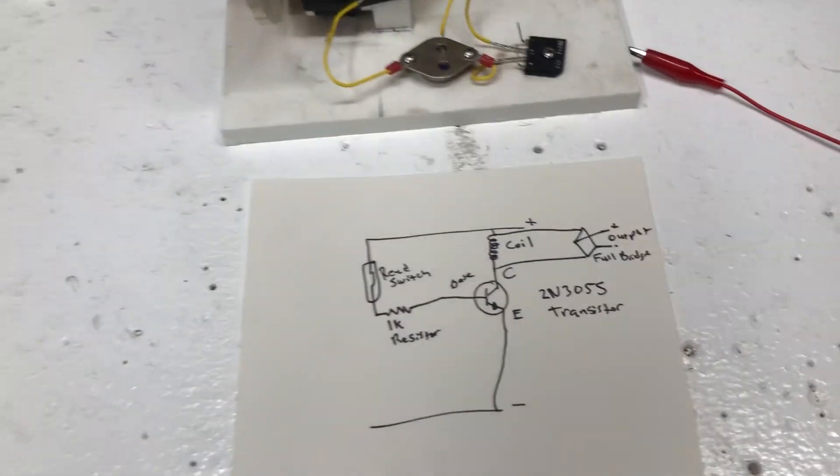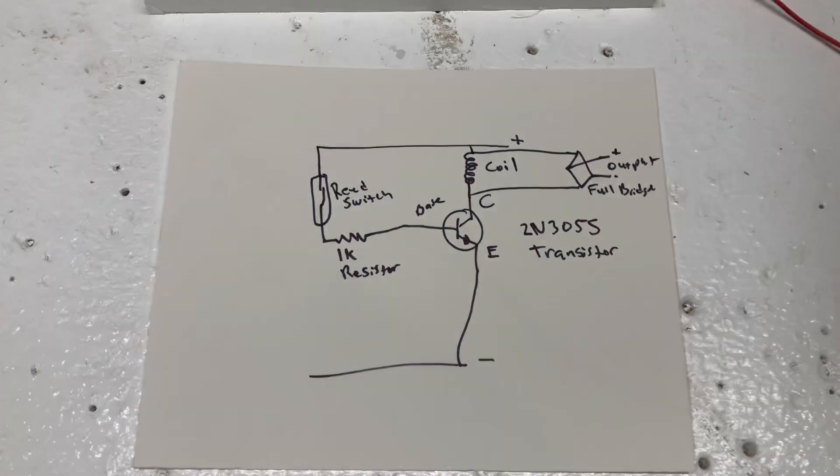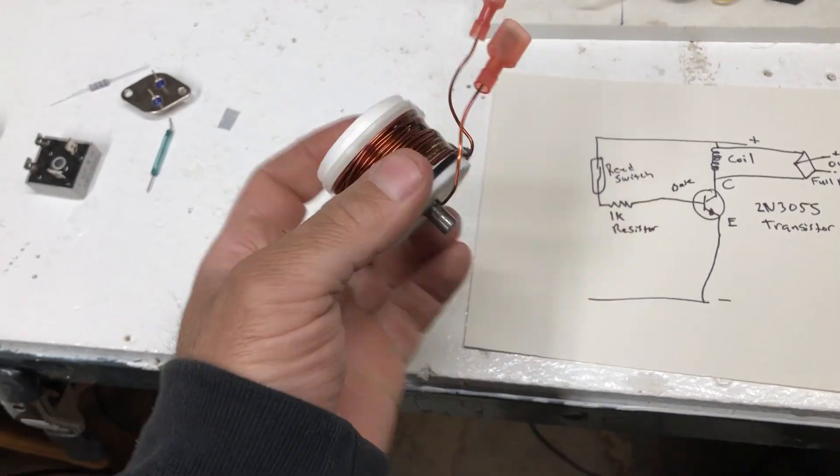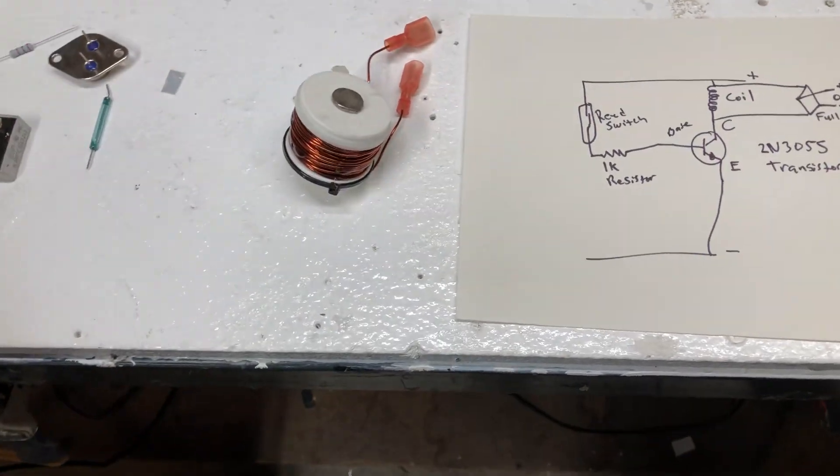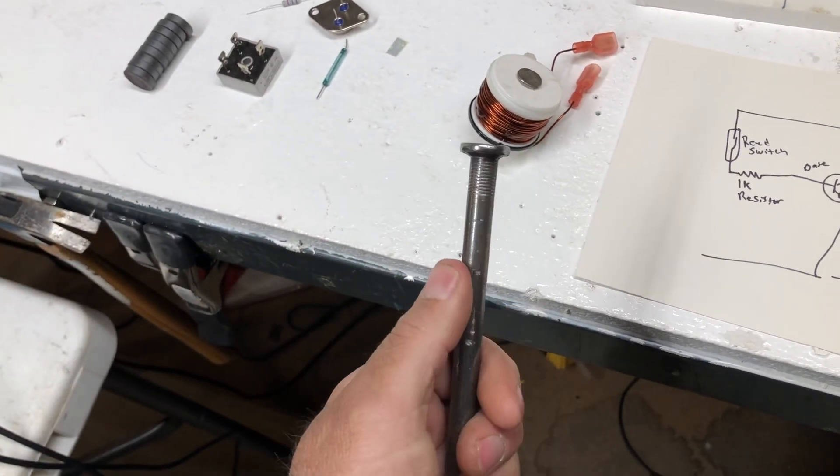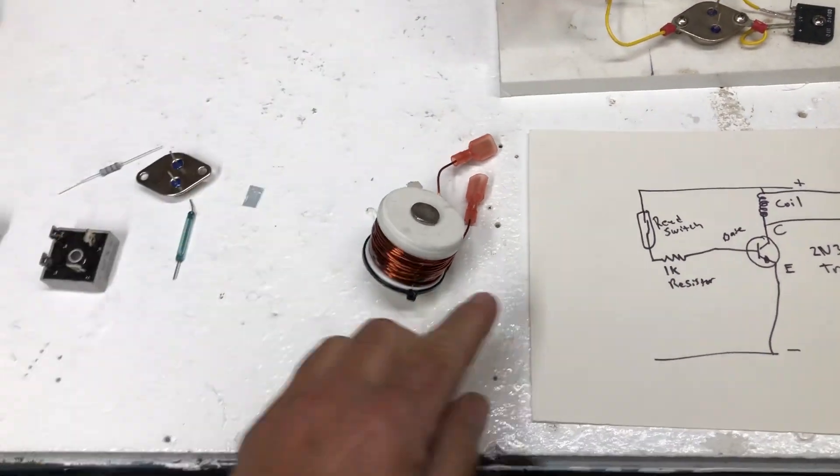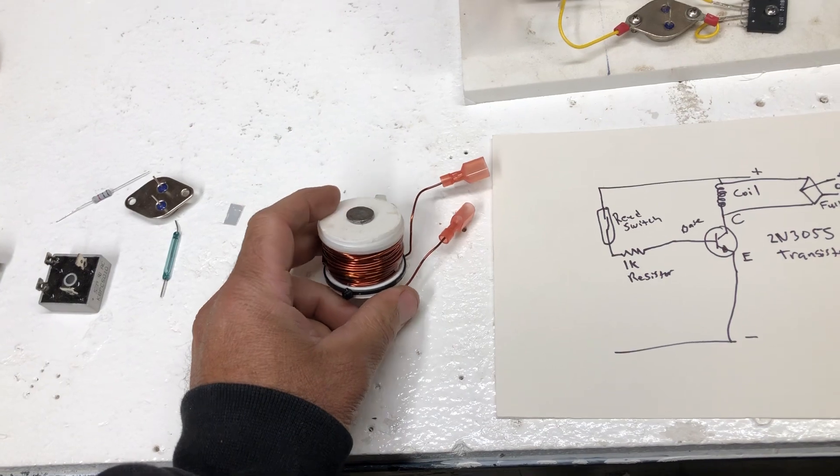So we're going to start off here with the circuit. Start off with the coil - this is just made from a bolt or a nail. You can just cut the nail down and wind it. This one is 18 gauge, but it should be quite a bit finer than that on the first one.